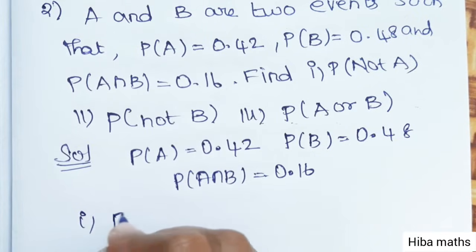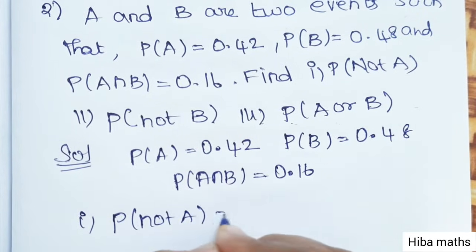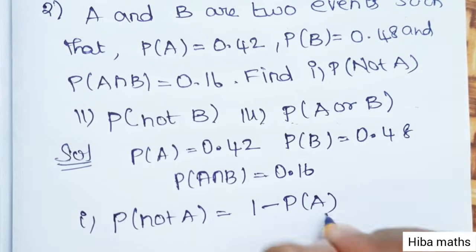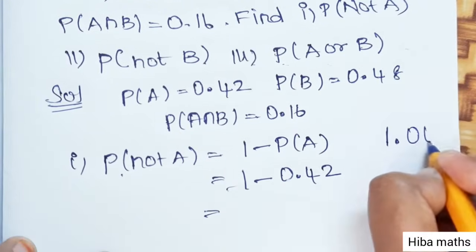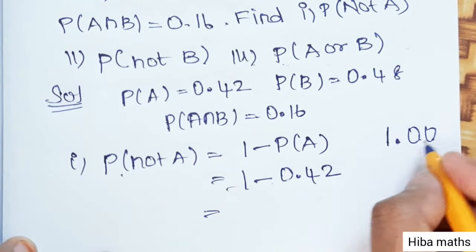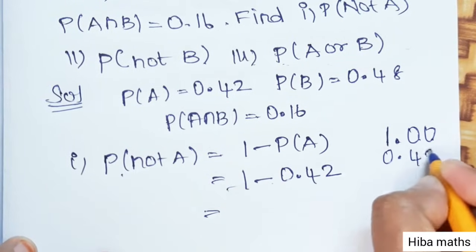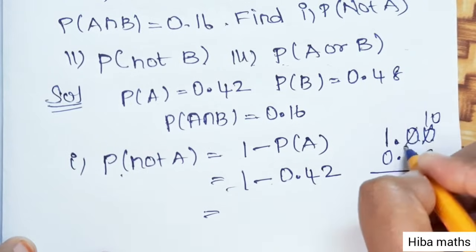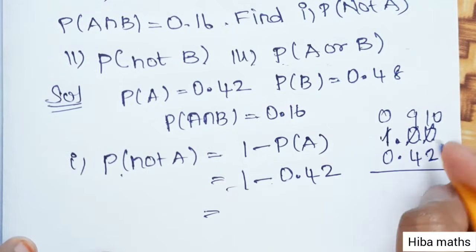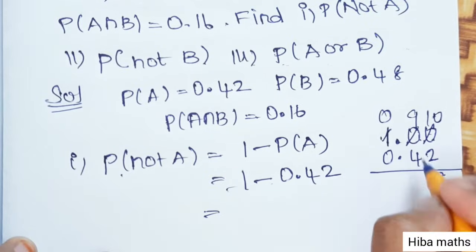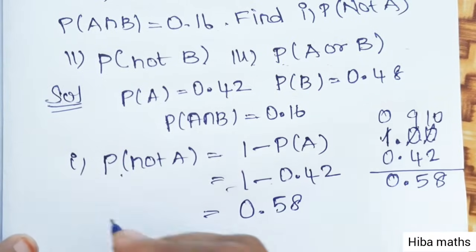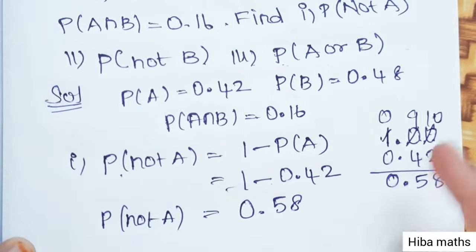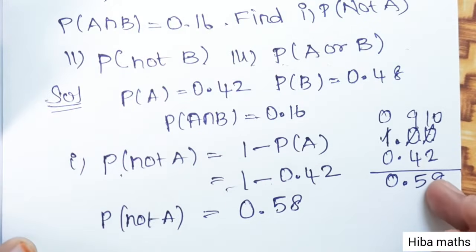First condition: P(not A). P(not A) = 1 minus P(A). So 1 minus 0.42. That gives us 1.00 minus 0.42, which equals 0.58. So P(not A) = 0.58.